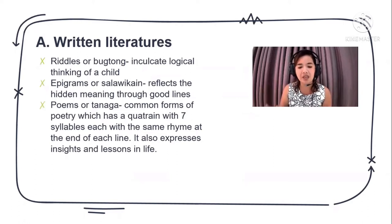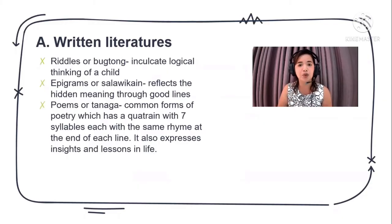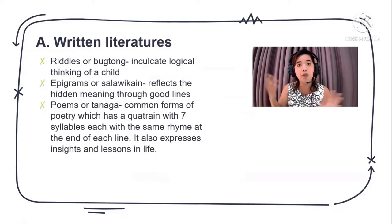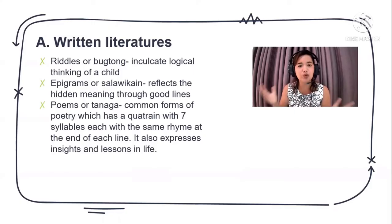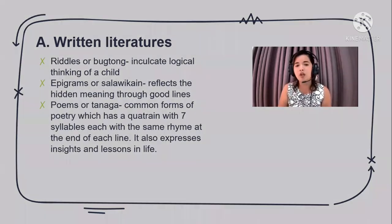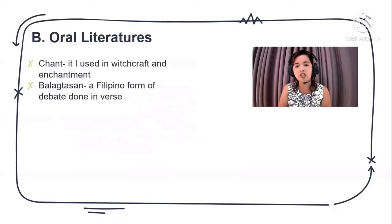Written literature basically uses letters put on a piece of material. Examples include riddles or bugtong, epigrams or salawikain, and poems or tanaga. You're likely familiar with riddles like 'ayan na siya, pabuka-buka ka' which refers to 'kuting,' and salawikain like 'pag maiksang pumot, matutok mamaluktok,' as well as poems written by famous authors or by ancestors.